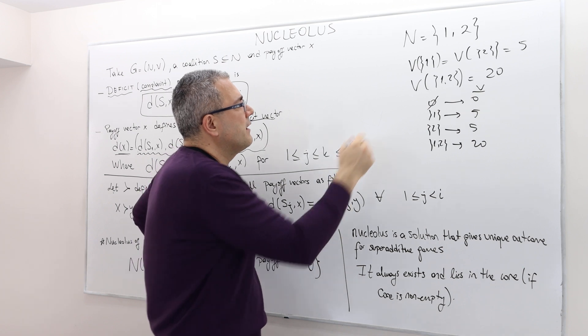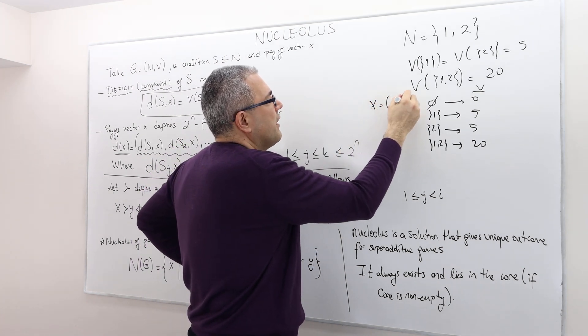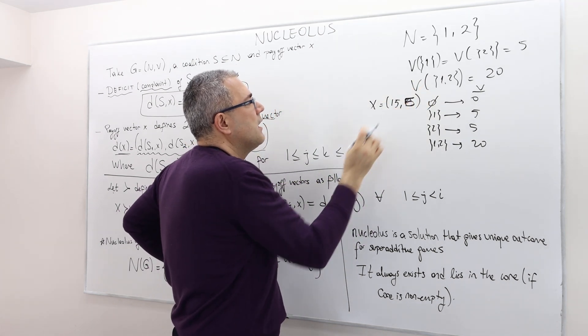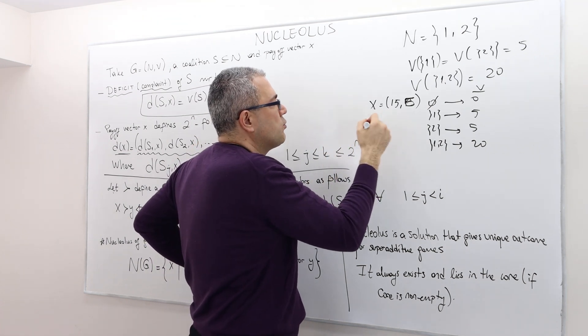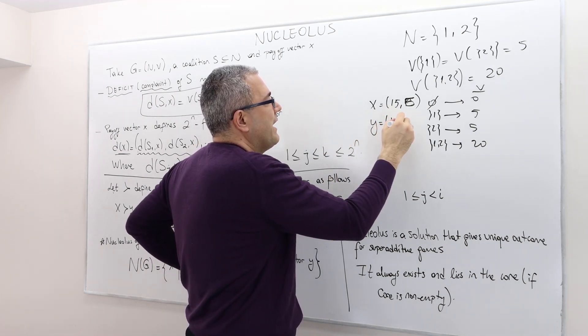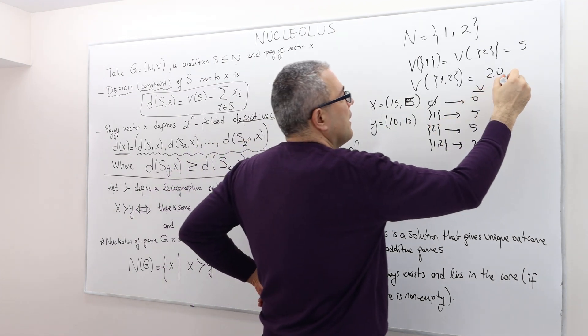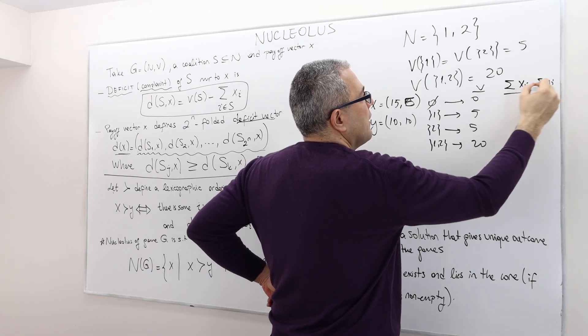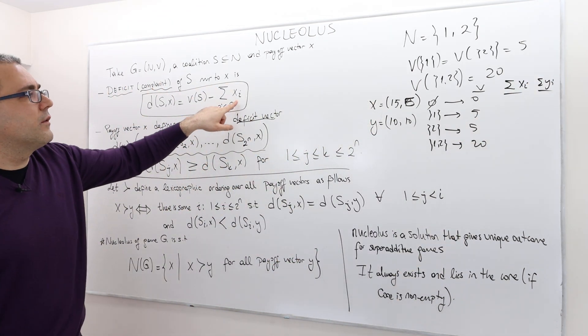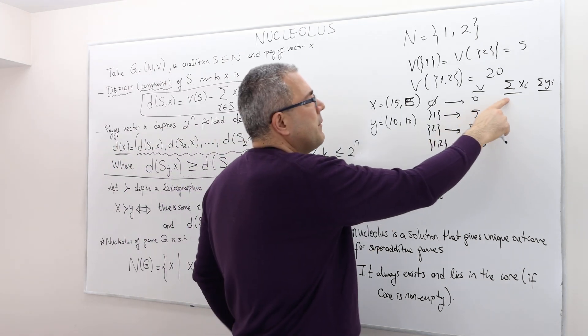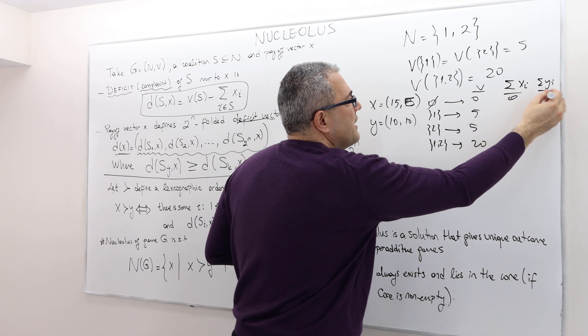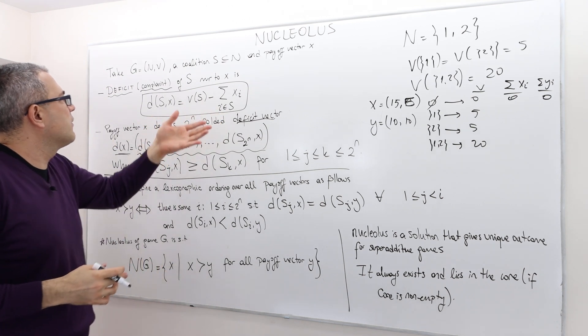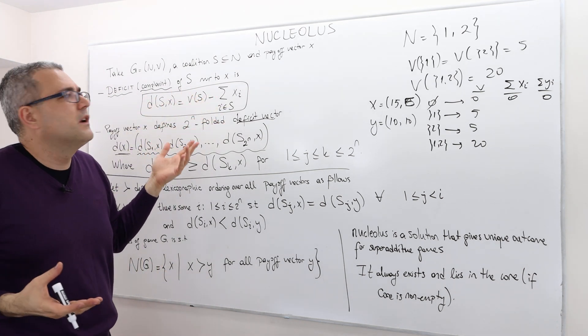Now I need to define a payoff vector x. Let's define it 15, 5, which was not fair, and then there was y, 10, 10. So I'm going to calculate this summation of xi and summation of yi for each coalition.